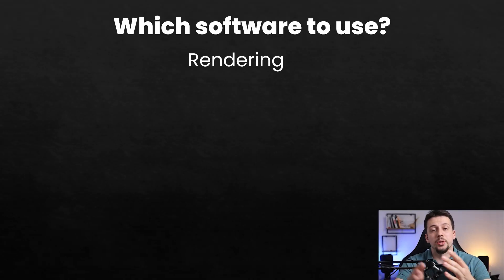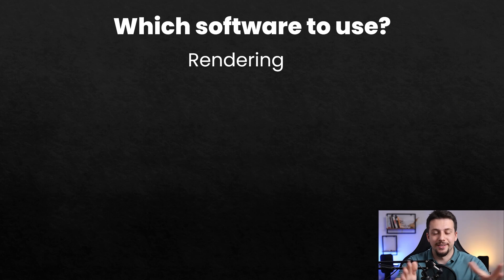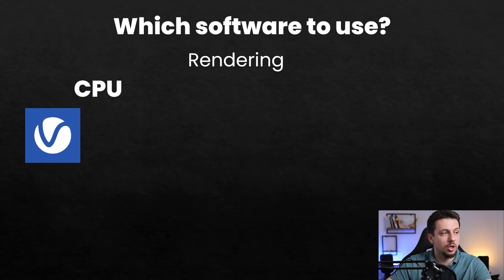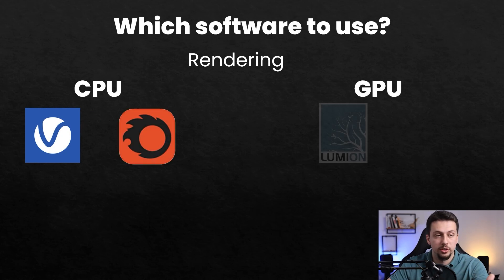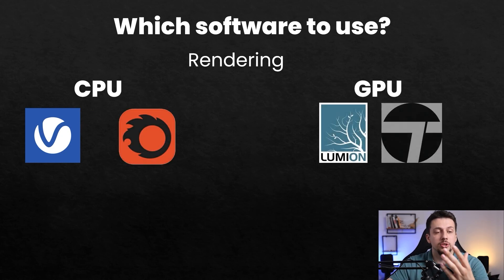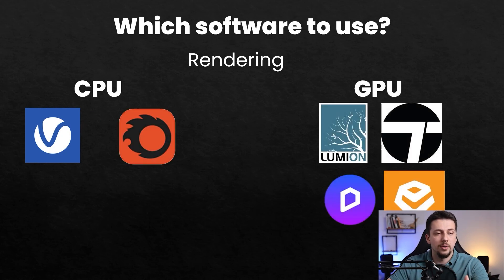Once you choose your modeling software, then we have to move on to the rendering software, which is where we actually create the images themselves. There are two different types of categories: CPU rendering software, which are V-Ray and Corona, and GPU rendering software, which includes Lumion, Twinmotion, D5 Render, and Enscape. These are the main, most popular ones that I would recommend.